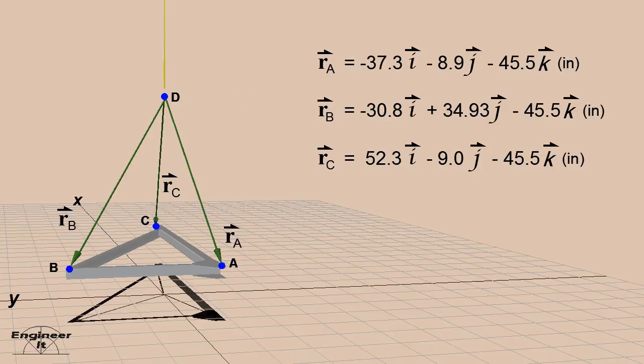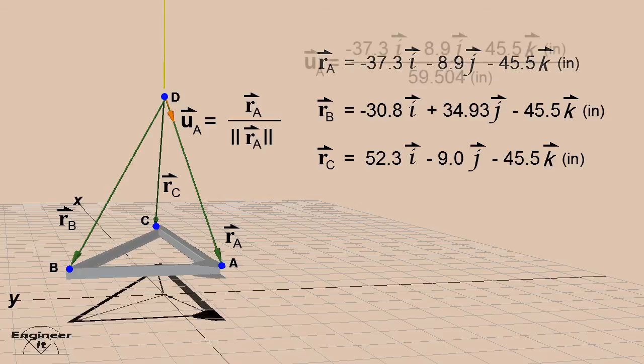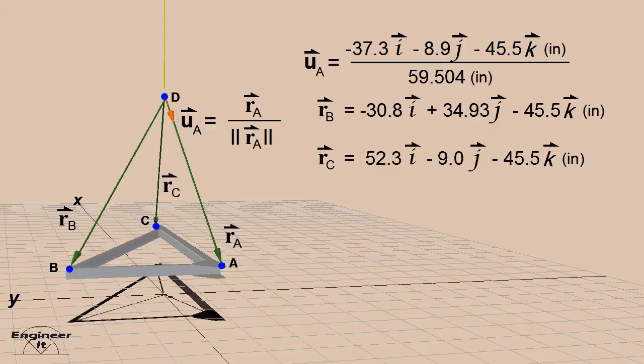Next, we need to normalize these vectors. That means to change them into unit vectors. Let's normalize RA. Review 3D unit vector video details. The unit vector is used as a pointer that defines the direction and the line of action of the force vector FA, which is along the rope.